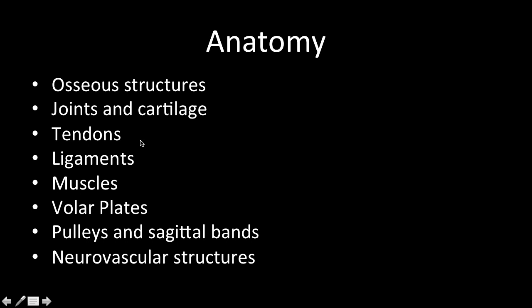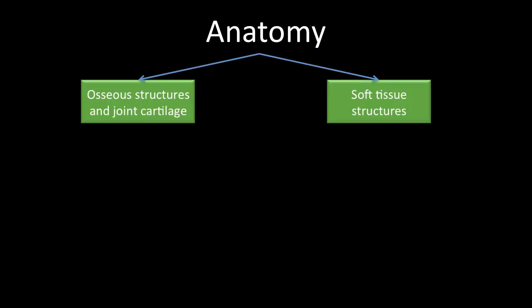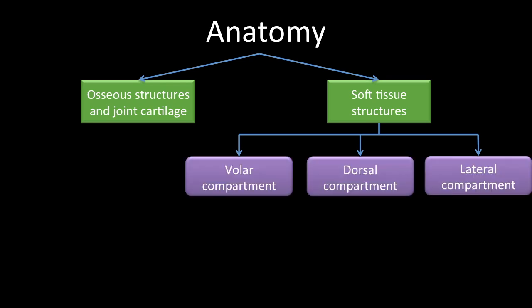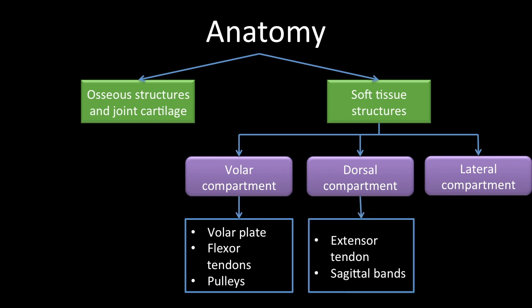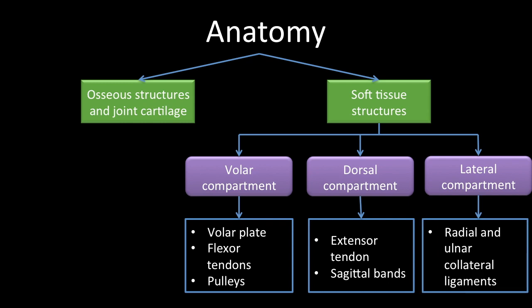Now for scan reporting, divide the anatomy into osseous structures — bones, joints, and cartilage — and then soft tissue structures. The soft tissue structures can be divided into three compartments: the volar compartment, the dorsal compartment, and the lateral compartment. The volar compartment comprises the volar plate, flexor tendons, and pulleys from deep to superficial. The dorsal compartment has the extensor tendon and sagittal bands. The lateral compartment has the radial and ulnar collateral ligaments.